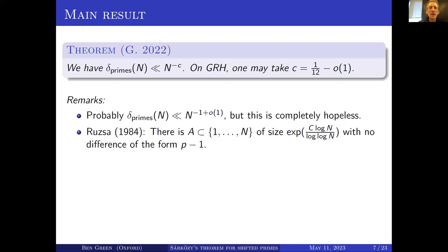The most naive random heuristics might suggest that even a set of size something like (log n)^2 should contain two elements that differ by a shifted prime. But Ruzsa actually constructed a much bigger set of size almost a power of n — e^{(log n)/(log log n)} — with no difference of the form p minus 1.